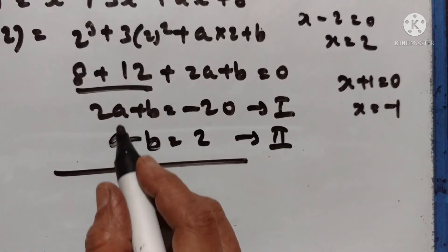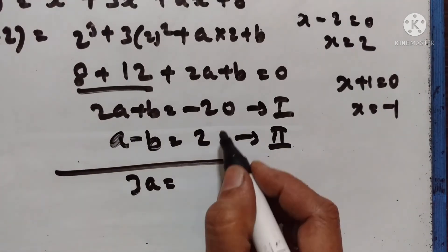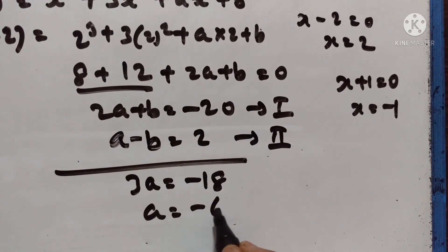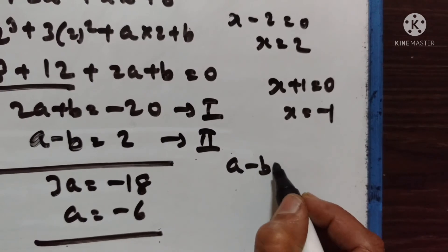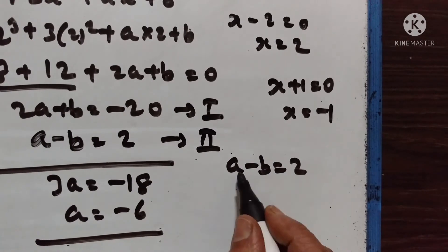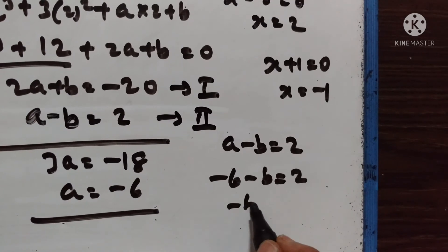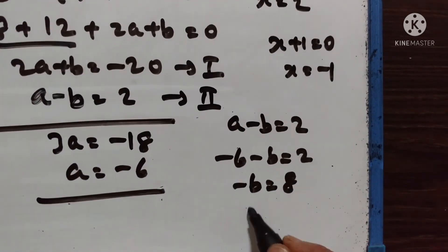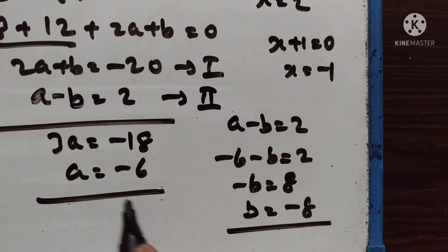Adding the equations: b - b = 0, and 2a + a = 3a. So 3a = -20 + 2 = -18, therefore a = -6. Substituting into a - b = 2: -6 - b = 2, so b = -8. Therefore a = -6 and b = -8.